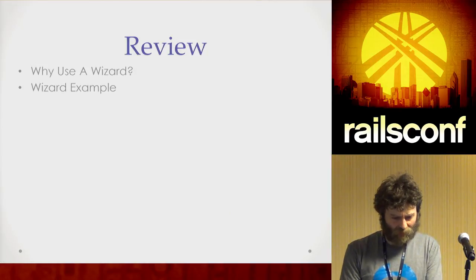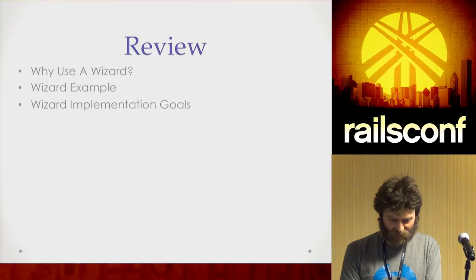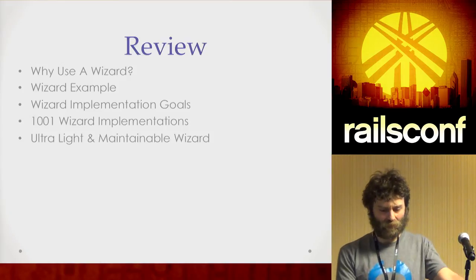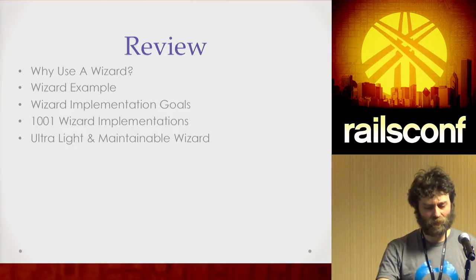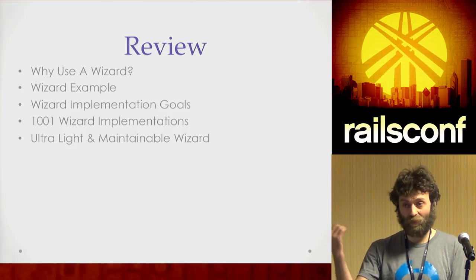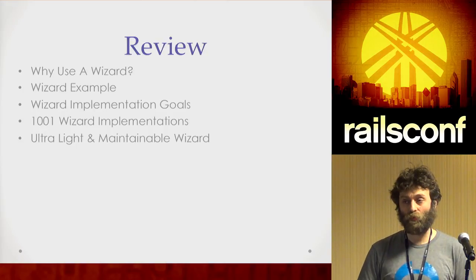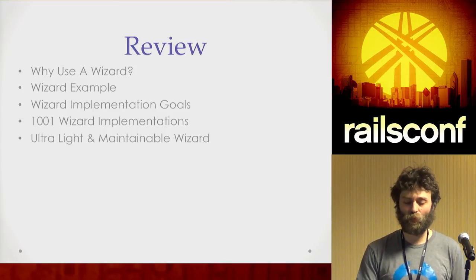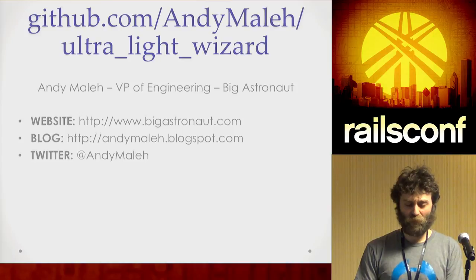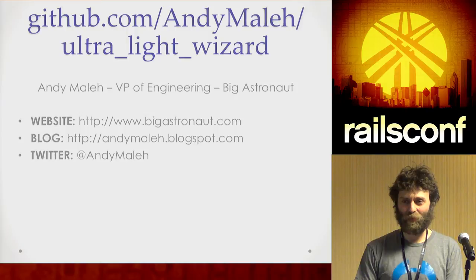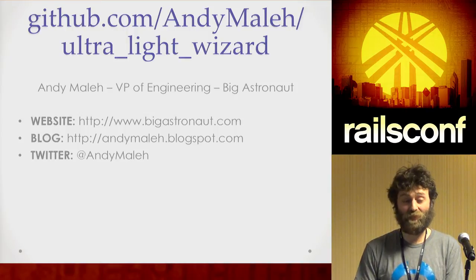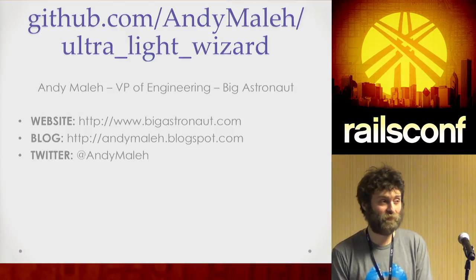That concludes the talk. I talked about why use a wizard, provided a wizard example, implementation goals, other implementations out there, and finally talked about my recommended approach for sticking with REST, MVC, and OO — all the things that help ensure your code is maintainable not only today, but also a year from now and by other developers joining the team with minimal training efforts. This is the project I launched. If somebody wants to pair with me on this, you're welcome to — maybe I'll do it at RailsConf.